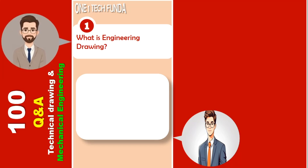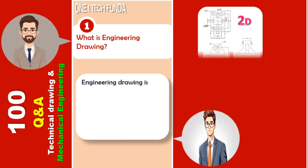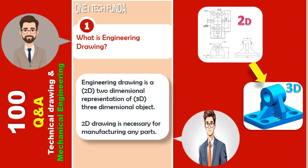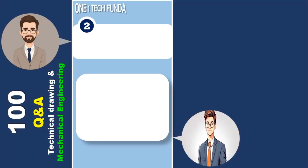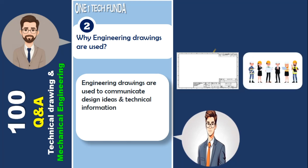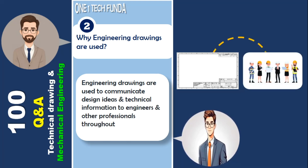What is engineering drawing? Engineering drawing is a two-dimensional representation of a three-dimensional object. 2D drawing is necessary for manufacturing any parts. Engineering drawings are used to communicate design ideas and technical information to engineers and other professionals throughout the design and development process.